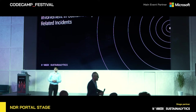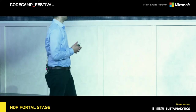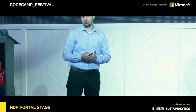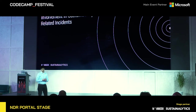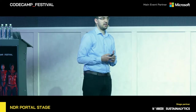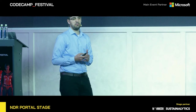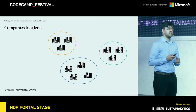My name is Mihai Ilje and I'm working as a machine learning engineer at Sustainalytics. In this project, we used graph neural networks to predict future incidents between companies. By an incident, we define a negative event in which two or more companies are involved, related to ESG.